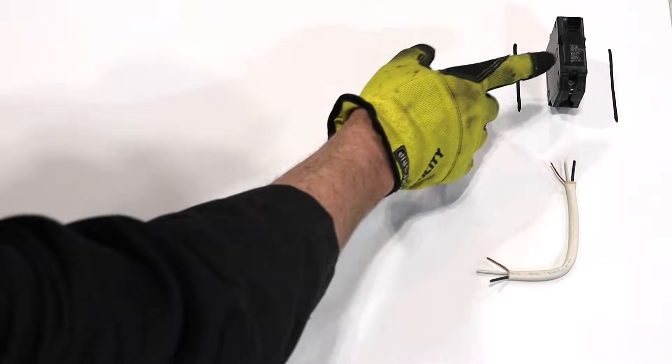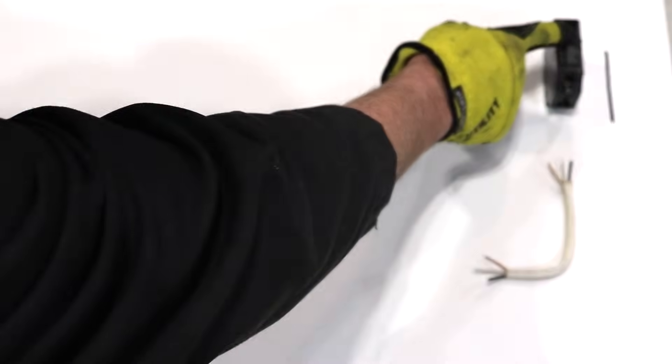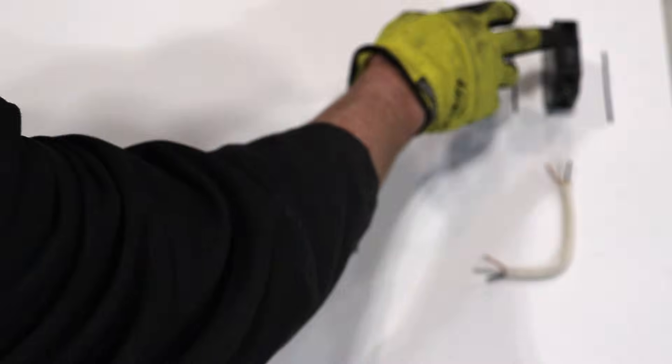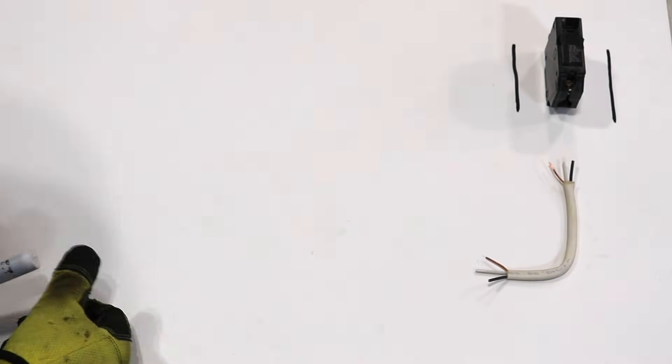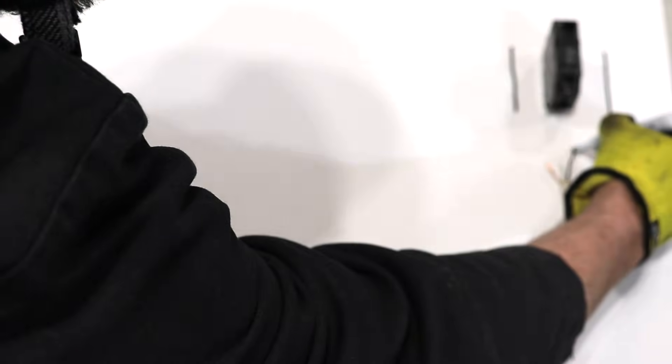So here's our panel box. We have our breaker. I put a piece of electrical tape over that because it's a 20 amp breaker but let's just pretend this is a 15 amp breaker. In your panel box you have your black wire that's hooked up to your breaker.